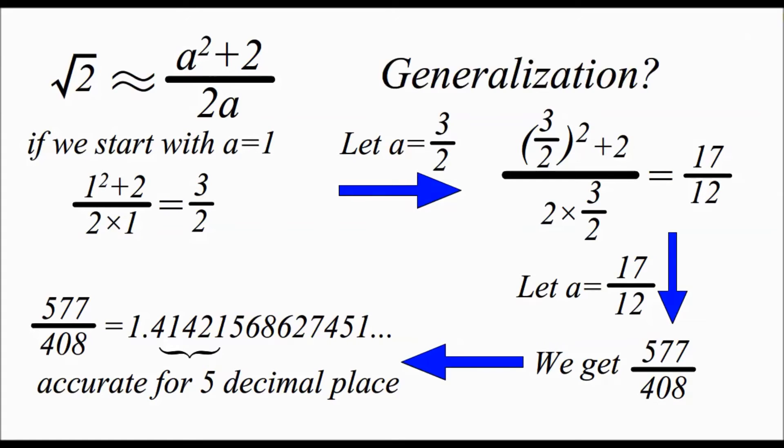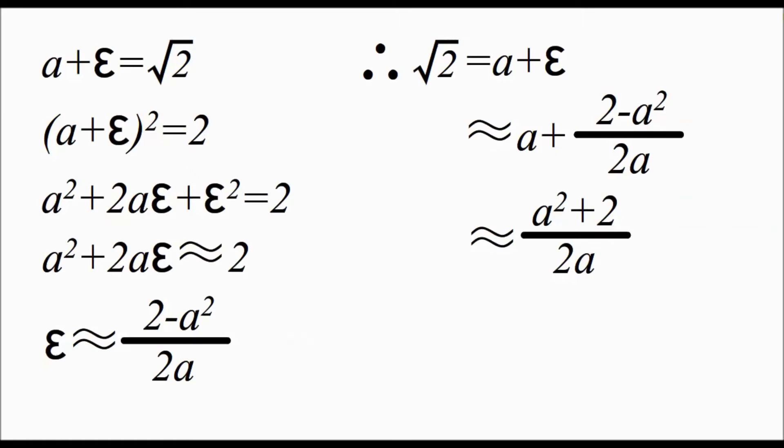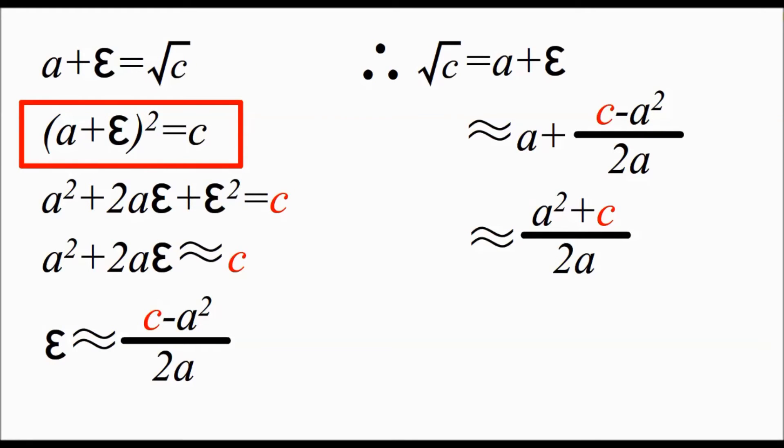Now, can we try to generalize such useful technique into something that applies to any square root of an integer? It's not hard if we think about this carefully. We can make a plus epsilon all squared equal to c, where c is a constant and an integer. Now we can do what we did before and we will find that the square root of c equals a plus epsilon, which is going to equal a squared plus c altogether divided by 2a.